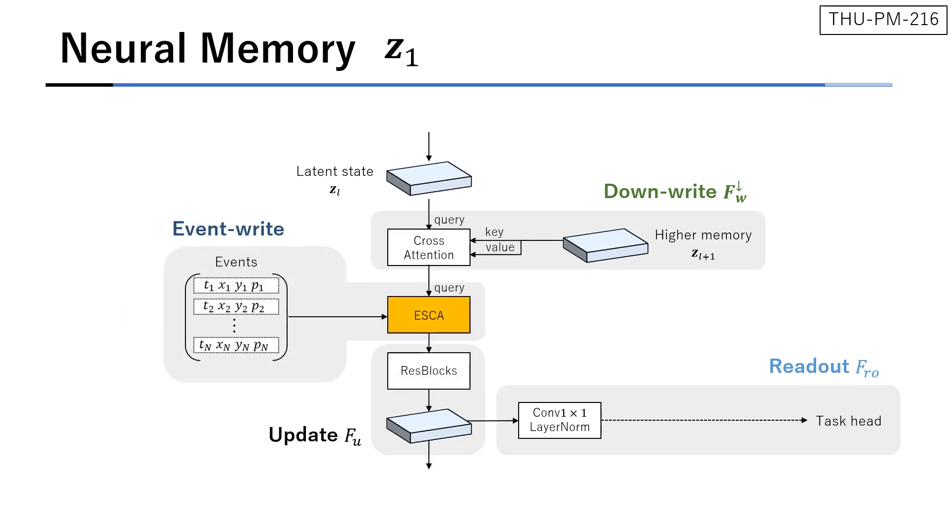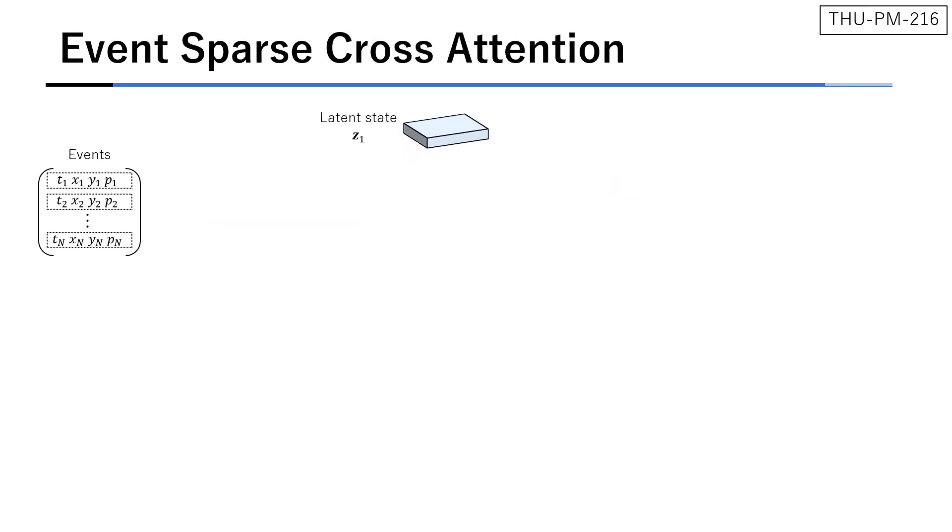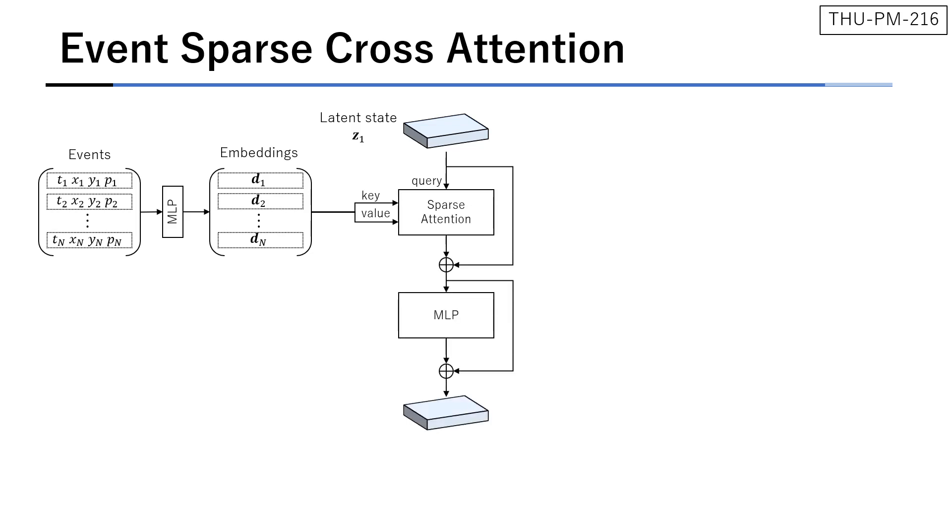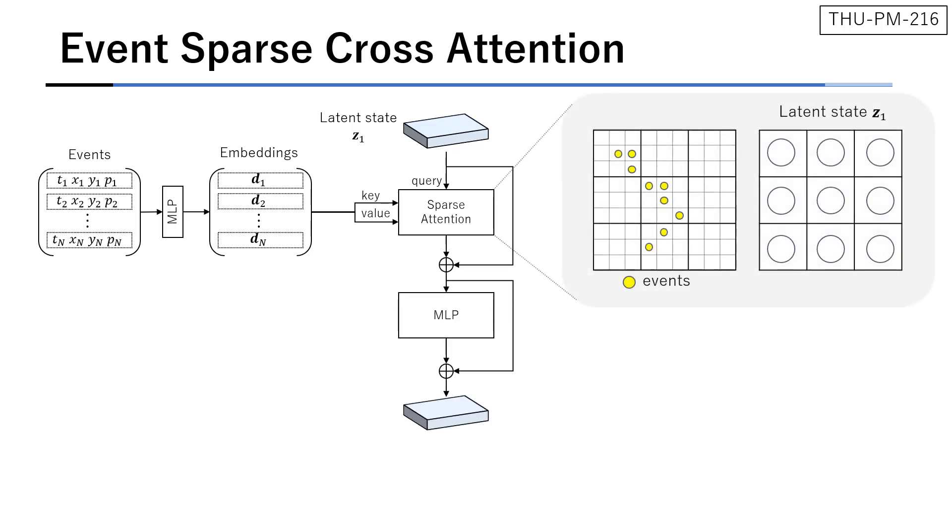The lowest memory Z1 requires an operation to handle raw event streams. To directly inject event streams into Z1 memory cells, we also propose event sparse cross-attention. The method first transforms events into event embeddings using an MLP. Then, the embeddings are written into a memory state using sparse attention. The sparse attention computes cross-attention between a memory cell and events inside a local window.